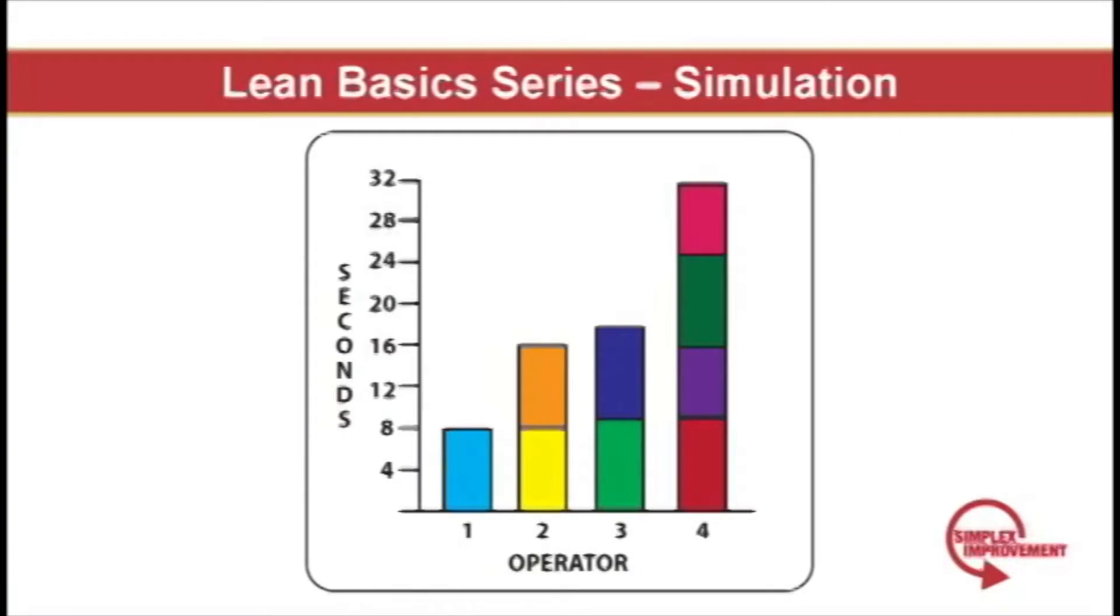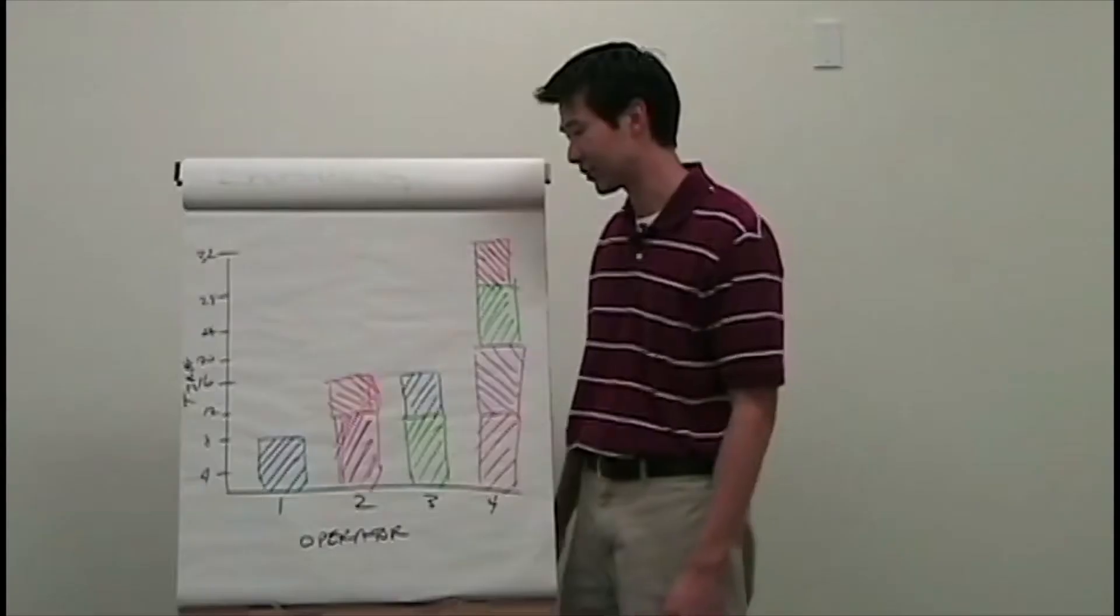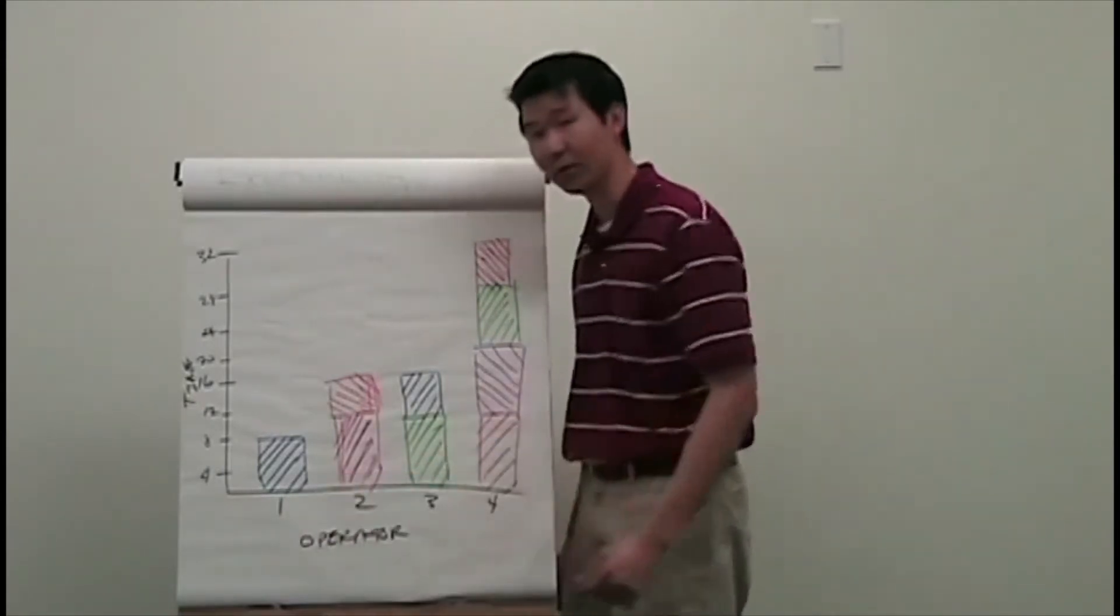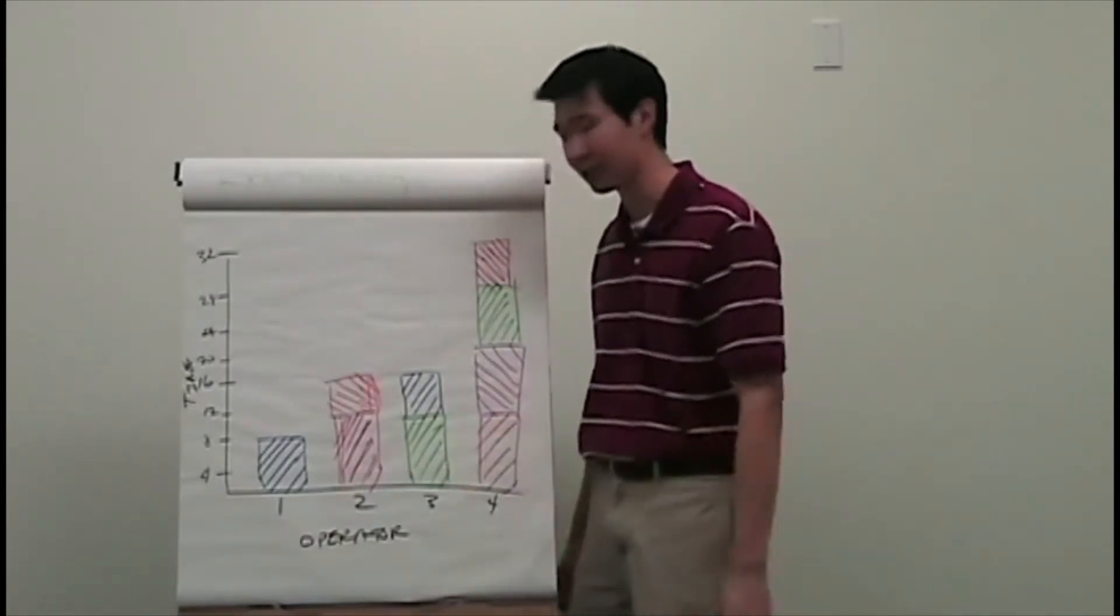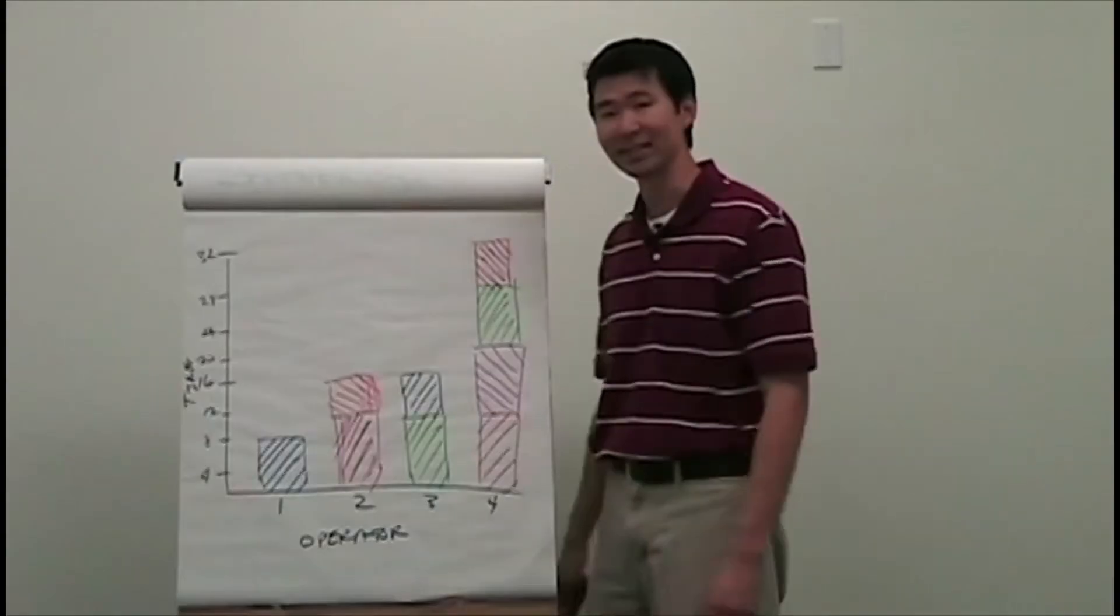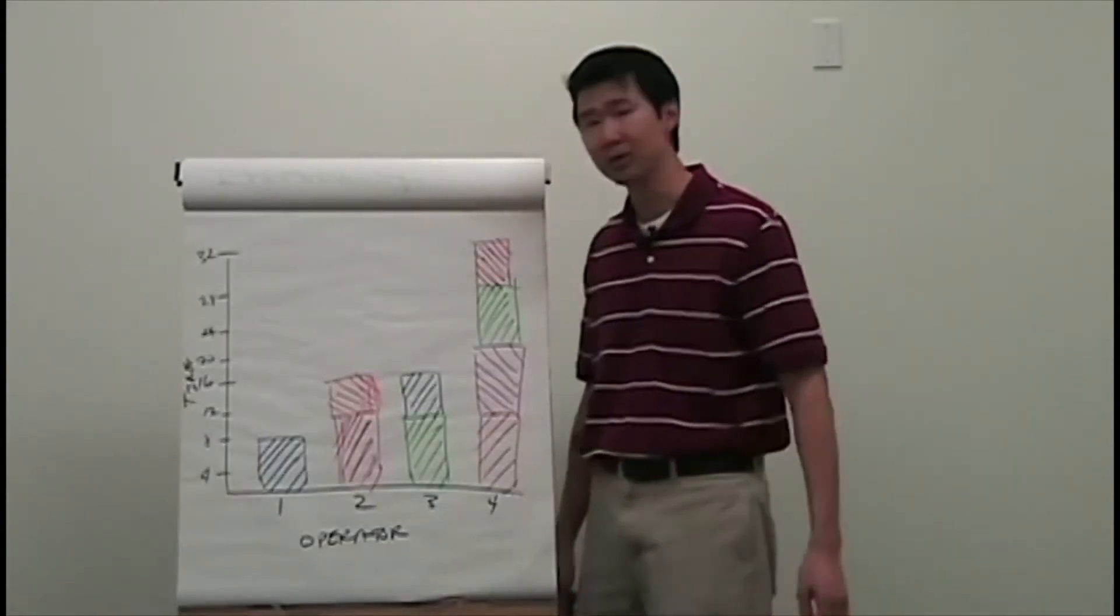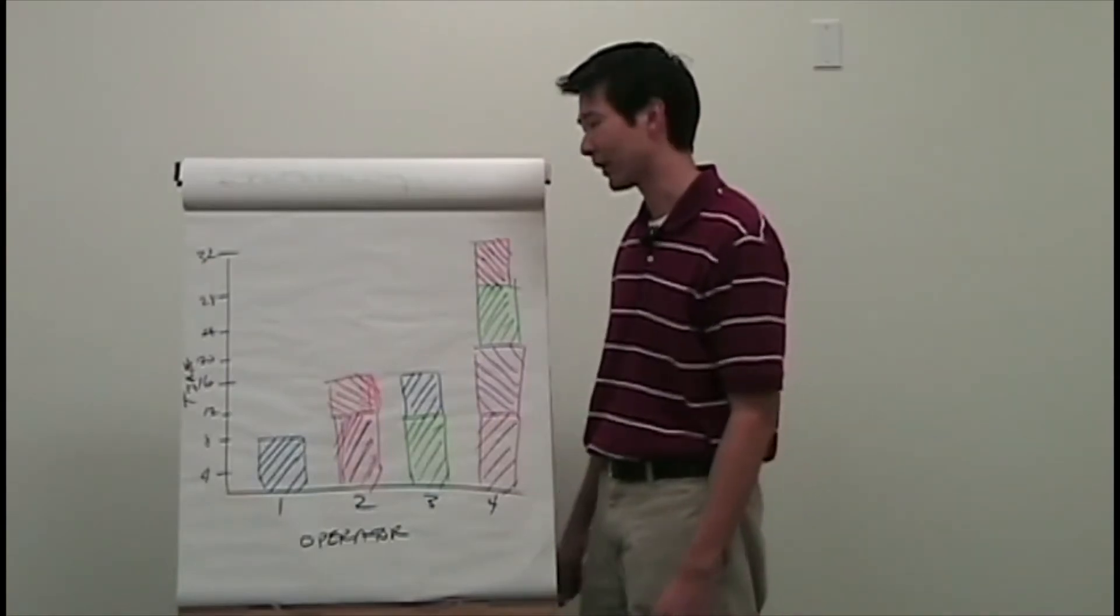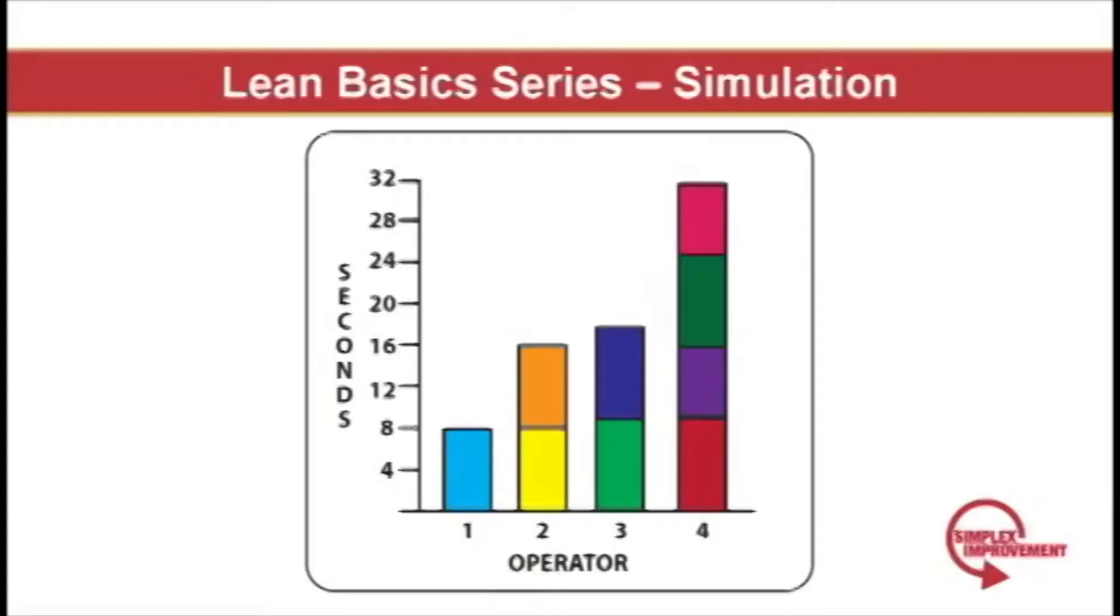So this is what I mean by level loading. You can tell from the second run that this production line was not very well level loaded. Worker one only had to do one fold, whereas worker four had to do four folds. Workers two and three only had to do two folds apiece. As a result of the imbalance, worker one had the least to do, worker four had the most to do with four folds. Worker one could outpace everyone, and the majority of the WIP was caused by worker one.